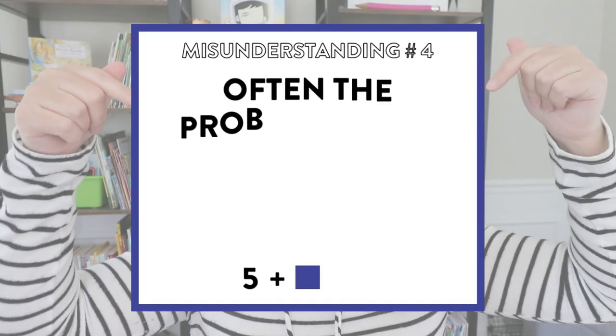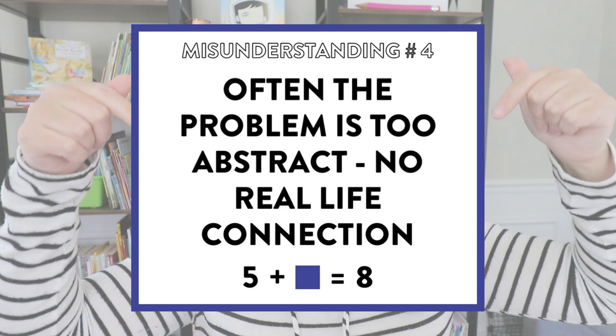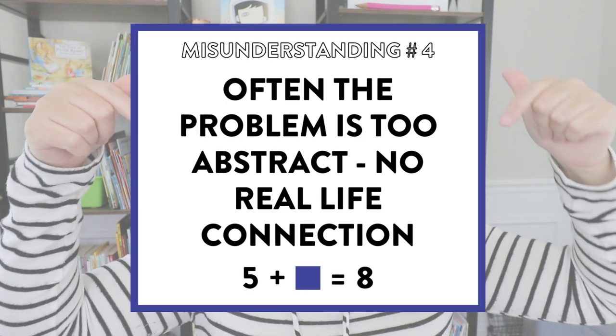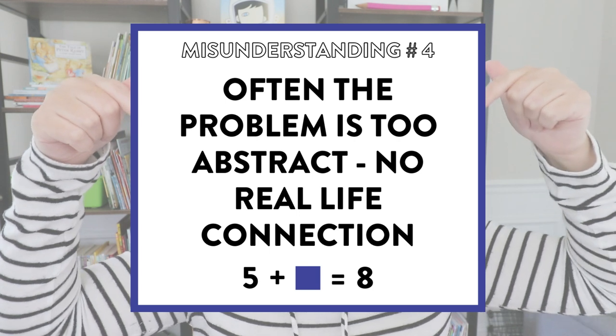Difficulty number four is that too often the problem is abstract without a story to relate to. For example, when students see something like five plus square equals eight, they're looking at you like, 'what does that really mean?' There's no real-life connection for them to understand why they would even need to solve that.